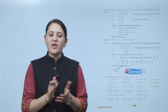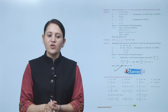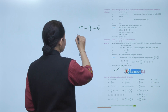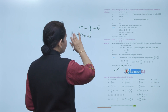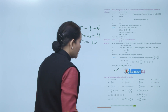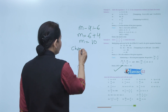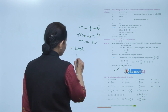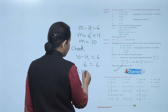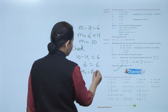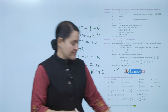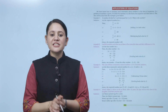Exercise 12.2: solve the following equation and verify the result. First: m minus 4 equals 6. Using transposition, 4 moves to the right side as plus 4, so m equals 6 plus 4, giving m equals 10. Checking: 10 minus 4 equals 6, so LHS equals RHS. Therefore m equals 10 is the solution. Practice all questions of this exercise.